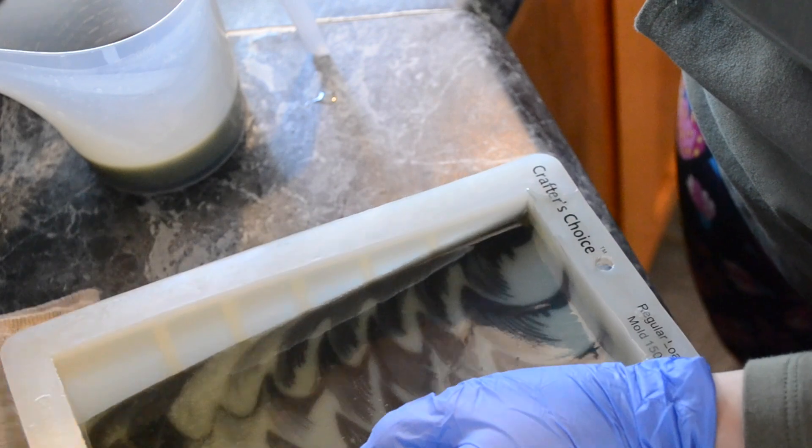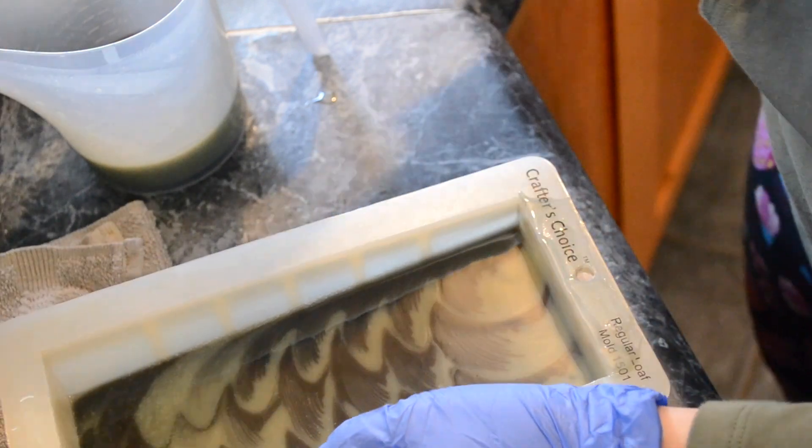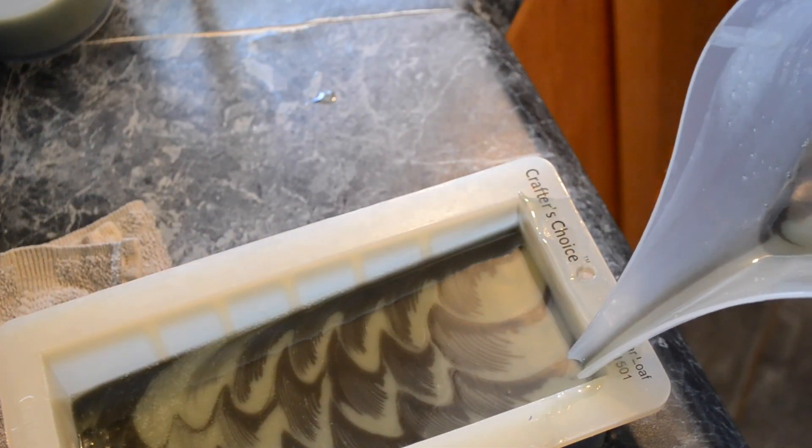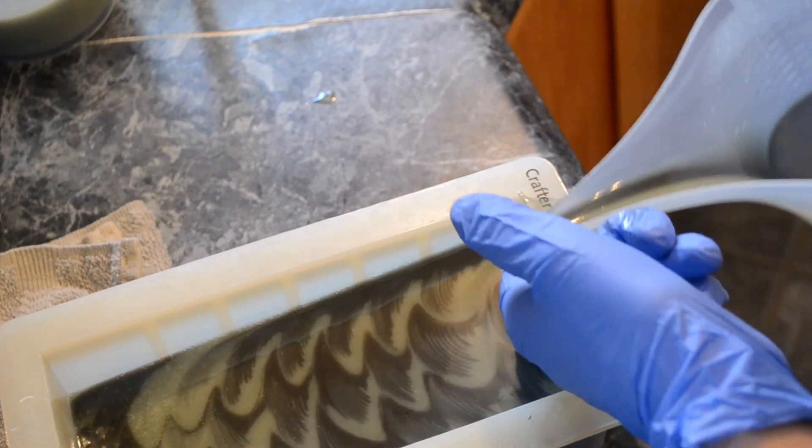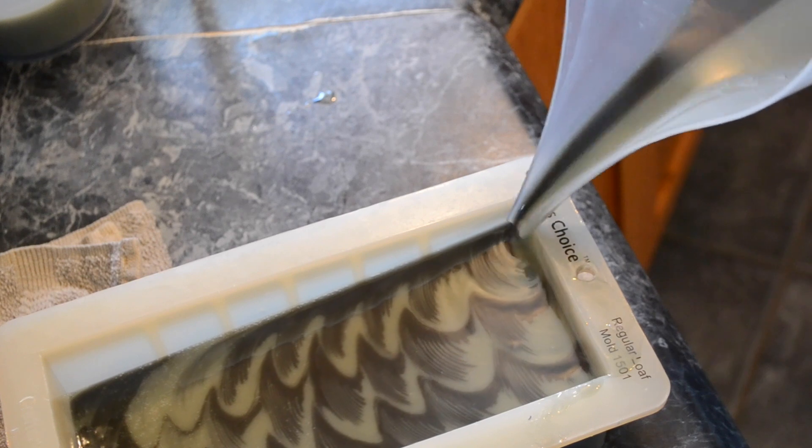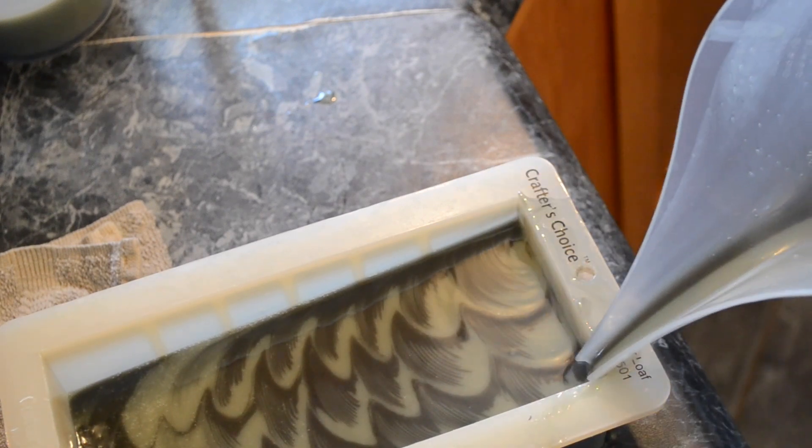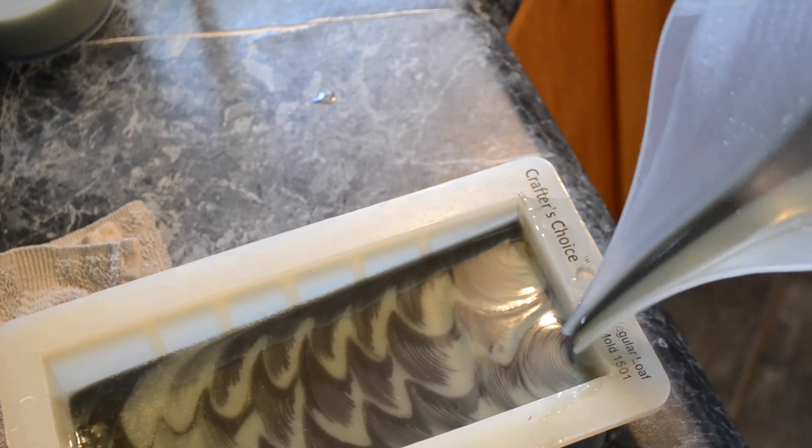My soap is getting to the top as I'm pouring, so I'm going to lower my towel for the second time. It's still slightly slanted. And you'll notice that the air bubbles are not nearly as bad.